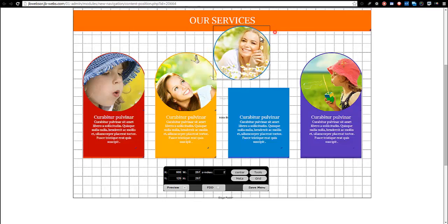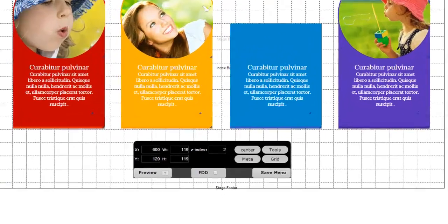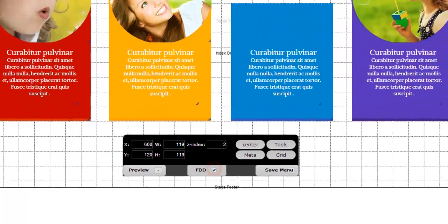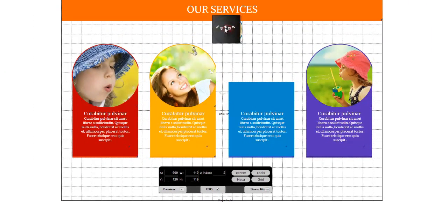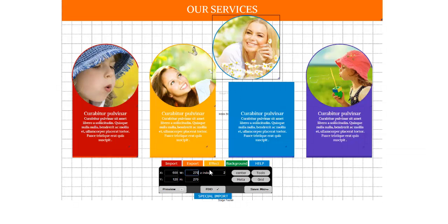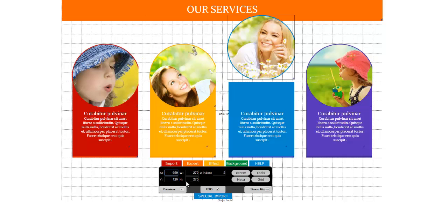Furthermore, you can freeze drag and drop, which can be very useful later on when you work with imported content or templates. By activating the FDD button, you cannot anymore change the size and position of content objects, but you still can change size and position by using Pwin.